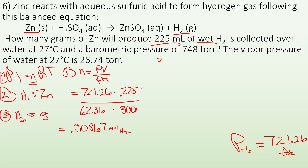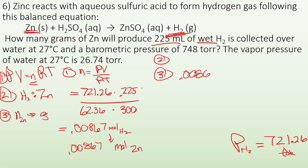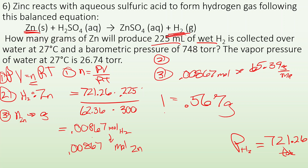It's a one-to-one ratio from the balanced equation, so I also have 0.00867 moles of zinc. Last step: convert moles to grams — 0.00867 moles of zinc times the GFM of zinc, which is 65.39 g/mol. I end up with 0.567 grams as my final answer. Alright, see you in class!